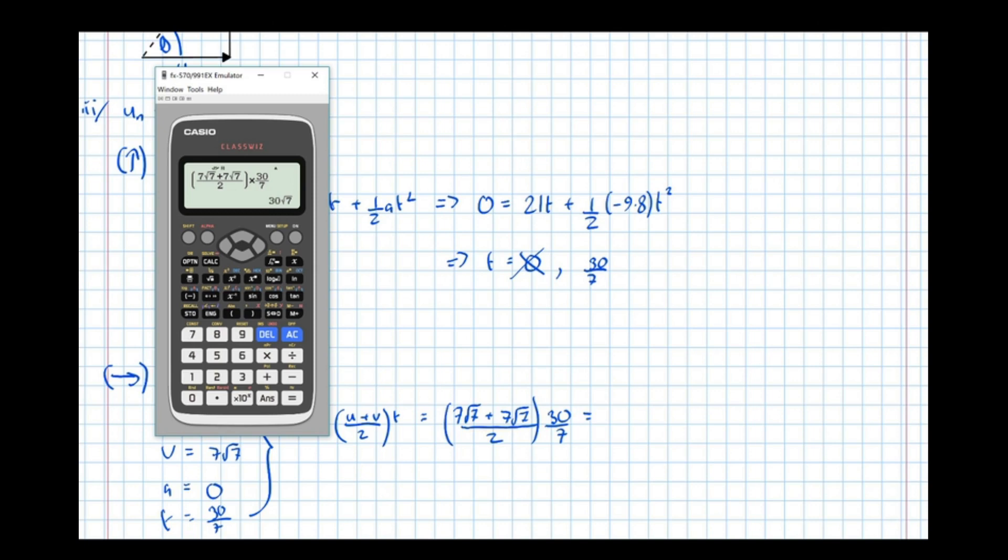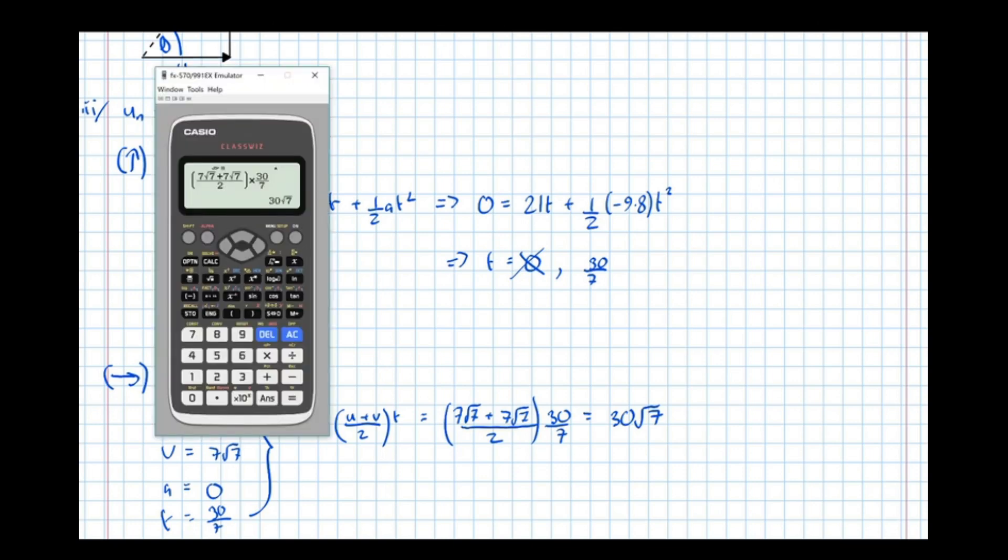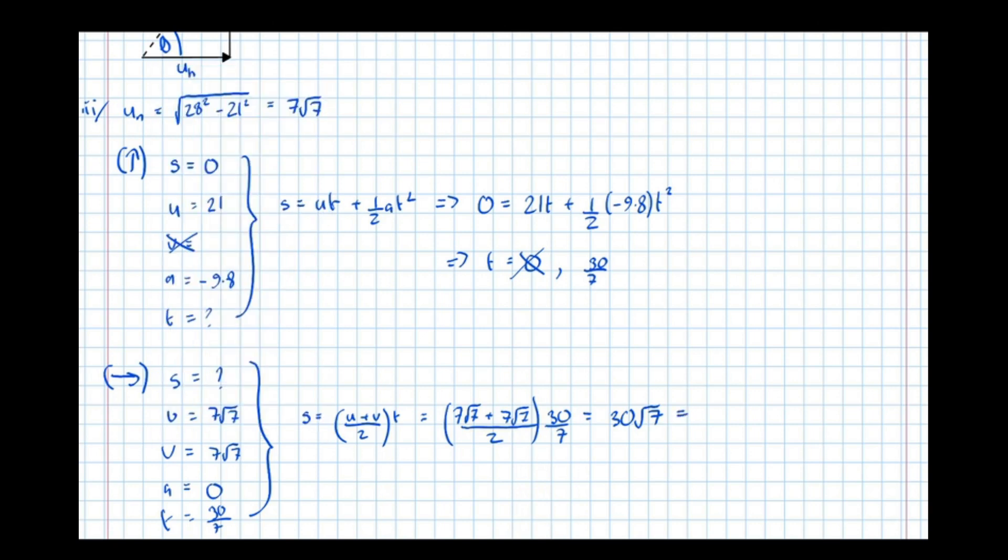Which we see is 30 root 7, which is 79.4 metres to 3 significant figures.